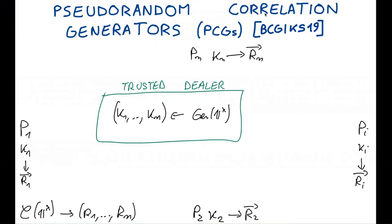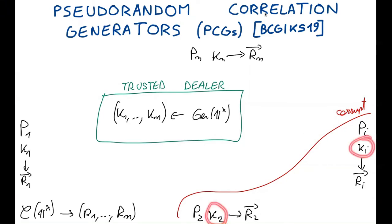Regarding the security of PCGs, assume that a subset of parties is corrupt. The corrupted parties know their outputs, and these outputs leak some information about the outputs of the honest parties, because the samples obtained by expanding the PCG seeds are all correlated — there is nothing we can do to avoid this leakage; it is intrinsic to the problem. However, there is another potential issue: the corrupted parties also see their seeds, and these seeds may leak additional information. The security definition of PCGs states that the seeds of the corrupted parties leak no information about the outputs of the honest parties, except what can be inferred from their expansion.